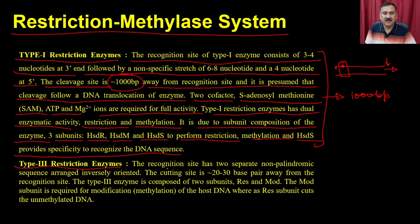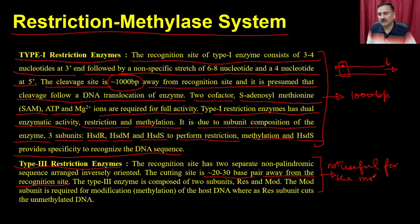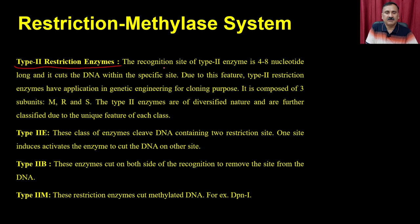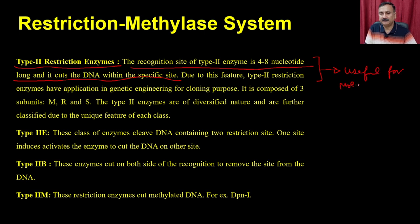Type 3 restriction enzymes have two separate palindromic sequences arranged in inverse orientation at the recognition site, and the cutting site is 20 to 30 base pairs away. These are also not useful for molecular cloning because their recognition and cutting sites differ. Type 2 restriction enzymes have a recognition site of 4 to 8 nucleotides long and cut the DNA within the restriction site, making them useful for molecular cloning.